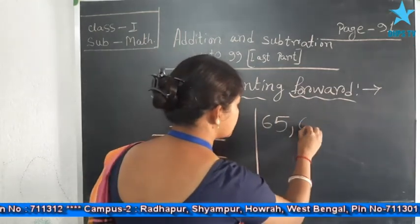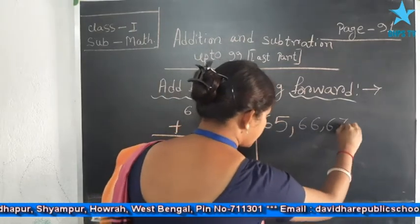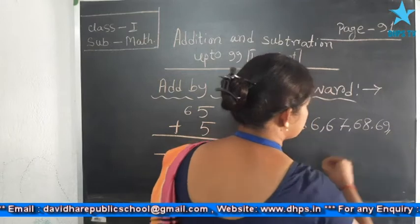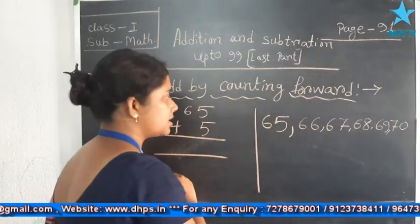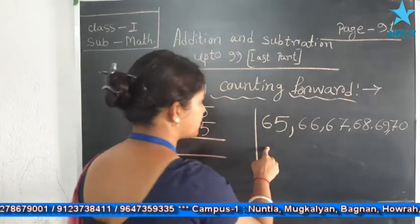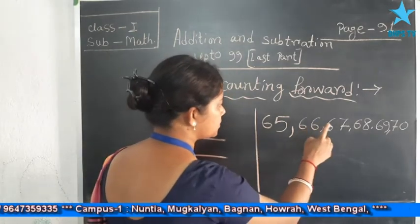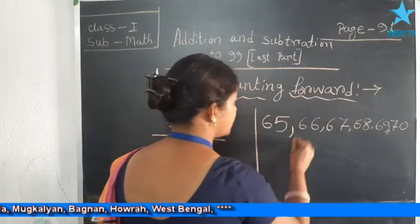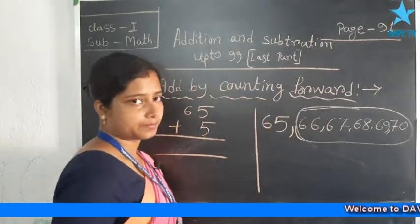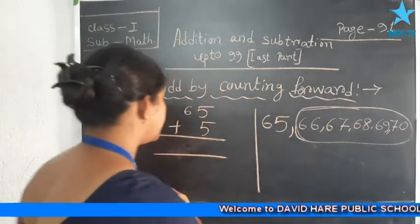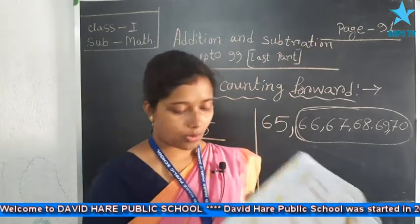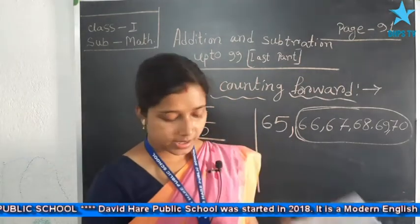After 65, what comes? 66, 67, 68, 69, 70. Then count the numbers after 65: after 65 comes 1, 2, 3, 4, 5. After 65 these are the 5 numbers, so obviously the answer will be 70. Similarly, you can solve all the remaining addition problems on page 93.